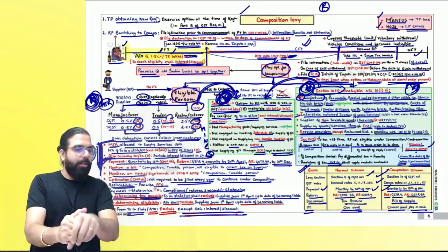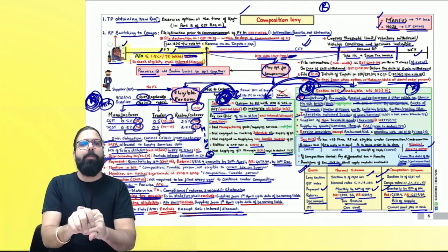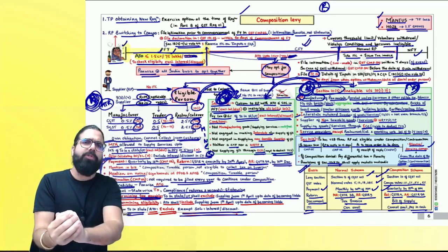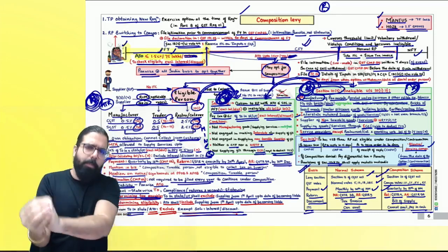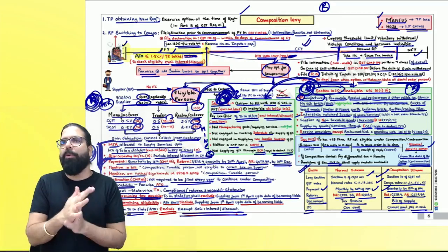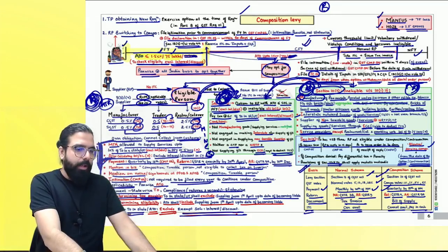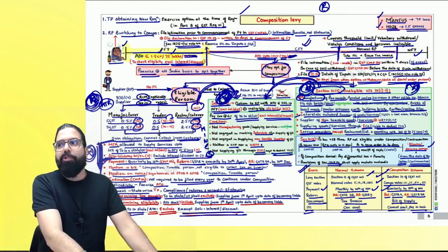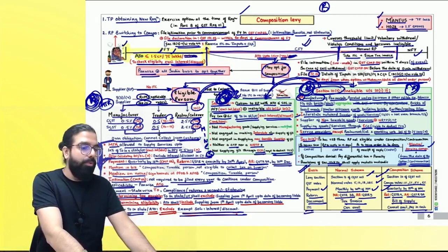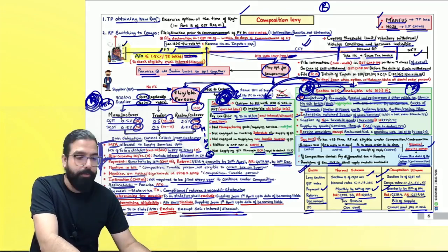Congratulations — B-graded chapter done! For your exam, remember: MTR under Section 10(1); Section 10(2) rules; Section 10(2A); the 10% of turnover or 5 lakh calculation; how to determine aggregate turnover and turnover for paying tax; MINES for ineligible persons. Practice question answers at home — the more you practice, the better. If you practice today, you'll solve everything easily; if you wait a week, you'll feel lost. Start solving now. Have a great day, take care!